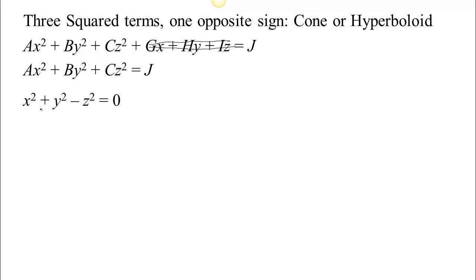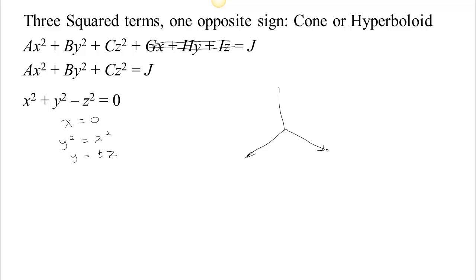This is an example of a cone: x squared plus y squared minus z squared equals zero. If we look at it when x equals zero, we have y squared equals z squared, so y equals plus or minus z. If we look at that trace, that's in the y-z plane because x is zero. So in that y-z plane, that's two lines — one line with a slope of one, and another line with a slope of negative one.